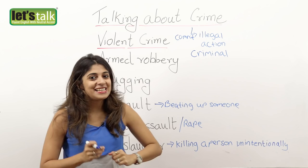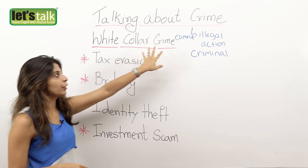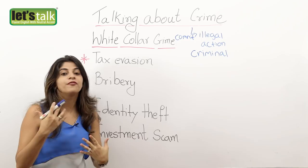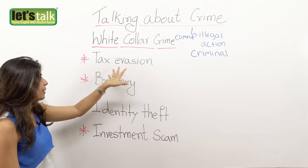So those are the types of violent crimes. Now let's have a look at white collar crimes. Now what are white collar crimes? These are certain thefts or frauds where a person is not physically hurt or physically threatened. Let's have a look at what types of white collar crimes there are.